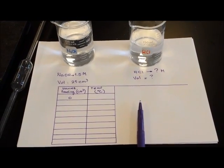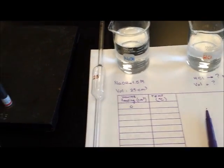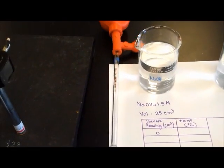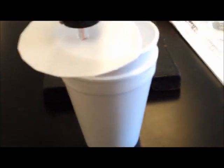In the meantime, while the temperature stabilizes, we will build up a data table with the volume and the temperature. The initial volume will be zero, and the initial temperature will be the one that we read after it is stabilized.